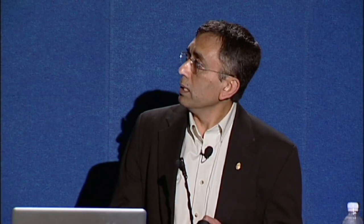What do sialic acids do? They've been around since the deuterostome lineage of animals emerged in the Cambrian expansion, and they have many biological roles ranging from neuroplasticity to glomerular filtration to a variety of other physical roles. Given their location, they're also the obvious target for every pathogen that approaches us — influenza, malaria, cholera, et cetera; the list would go off the screen if I completed it.